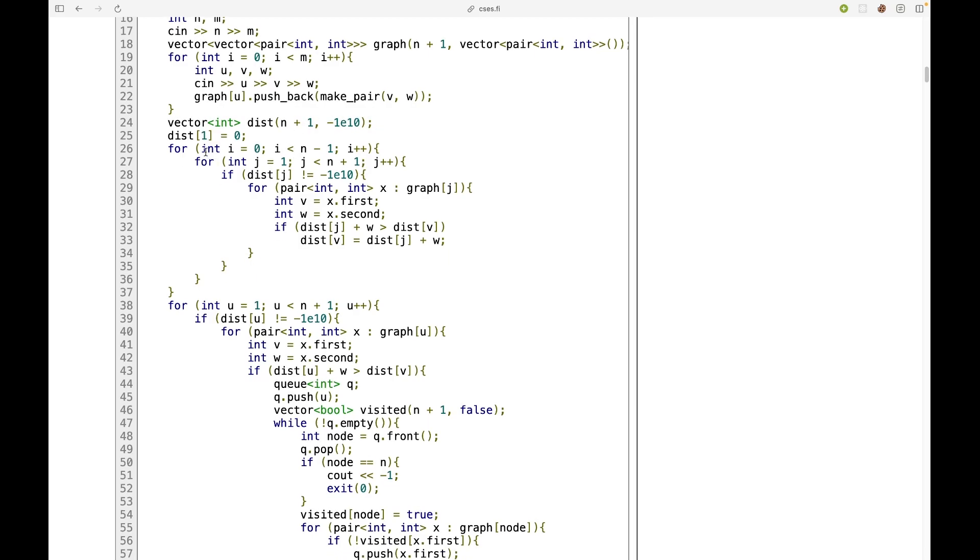Now the key idea is this is the O(n²) loop. So I am relaxing every edge n-1 times. So if distance of i is not equals to negative infinity, then I'm doing this. If I can maximize it, let's just maximize this. And this ensures that this is the maximum that I can get.